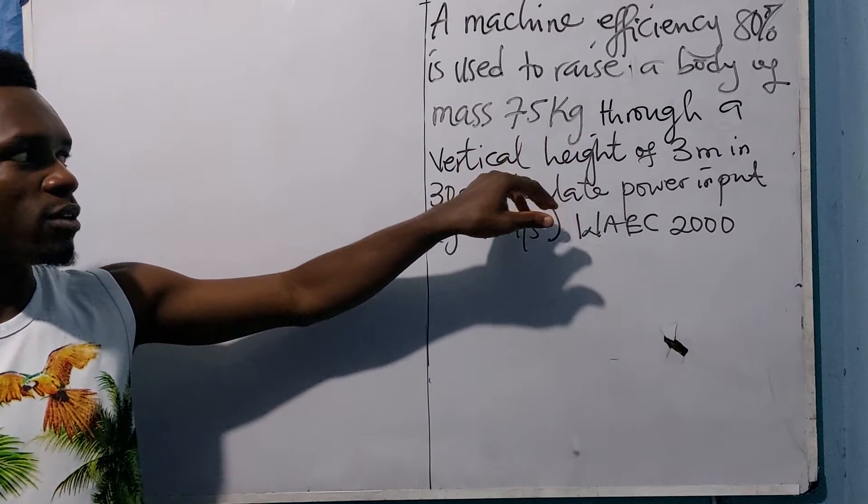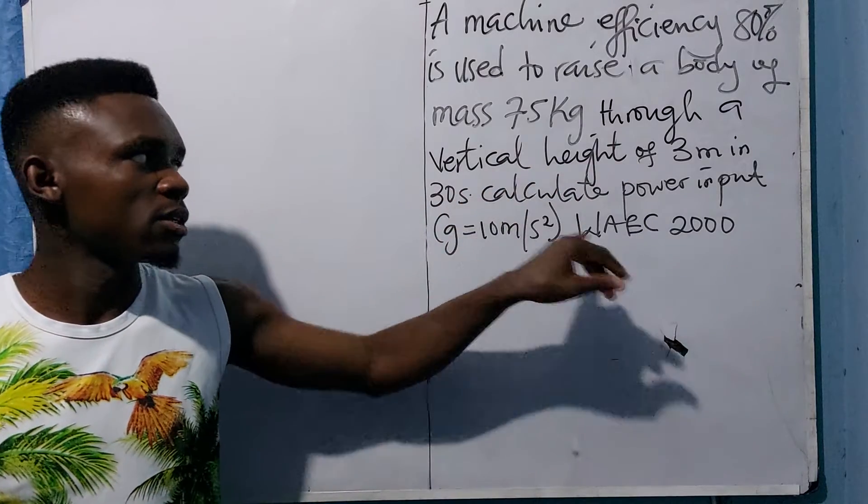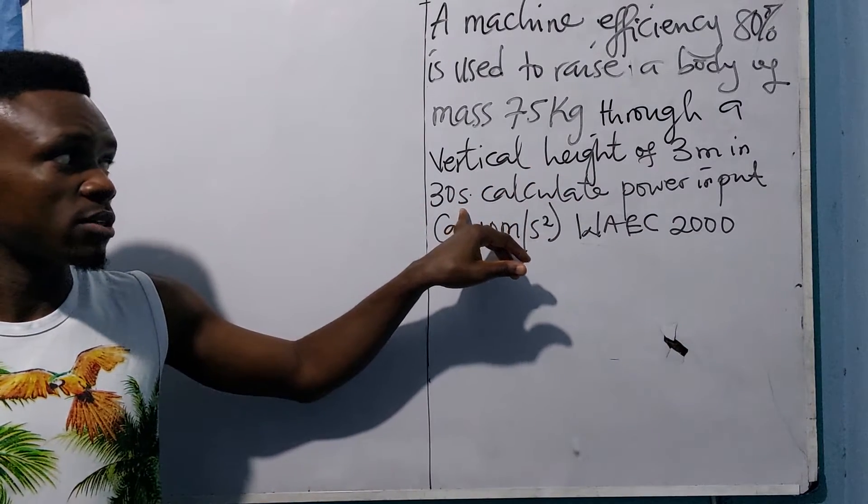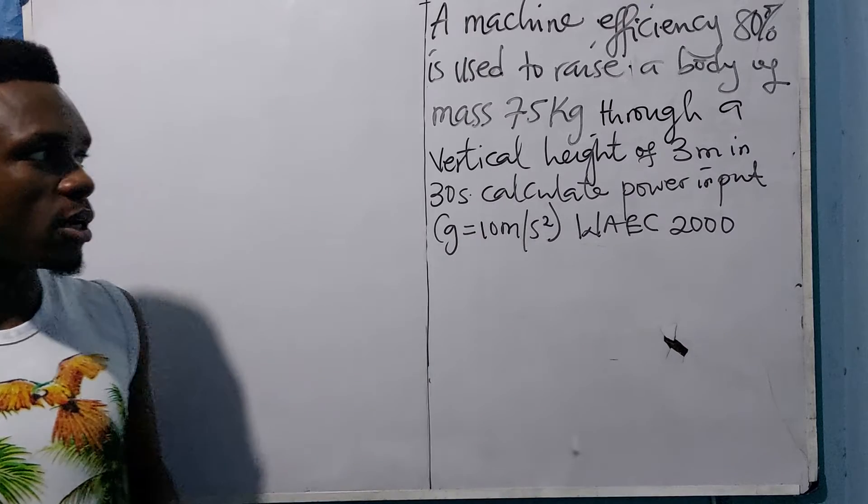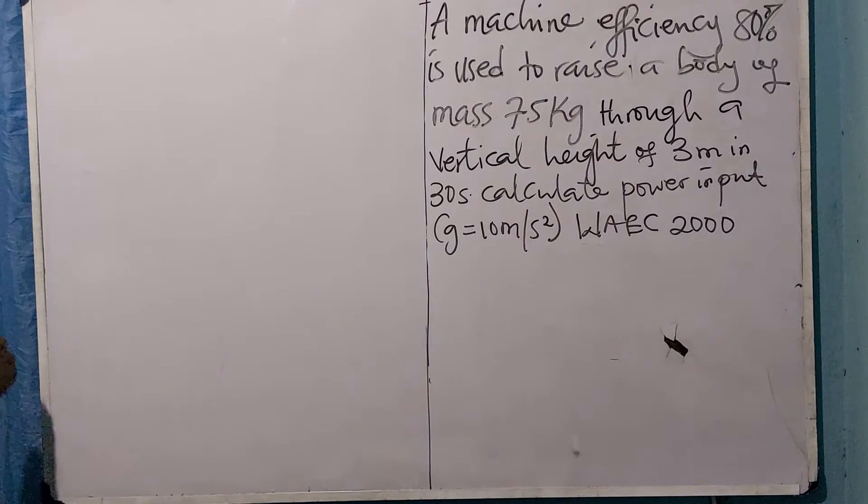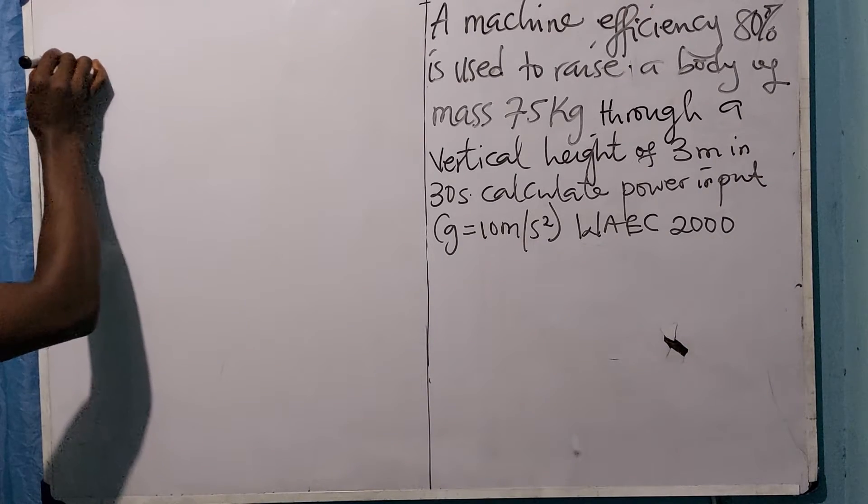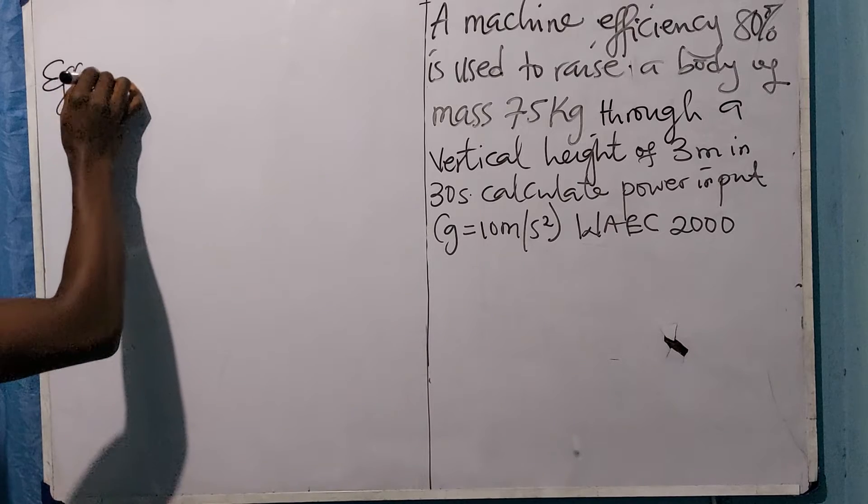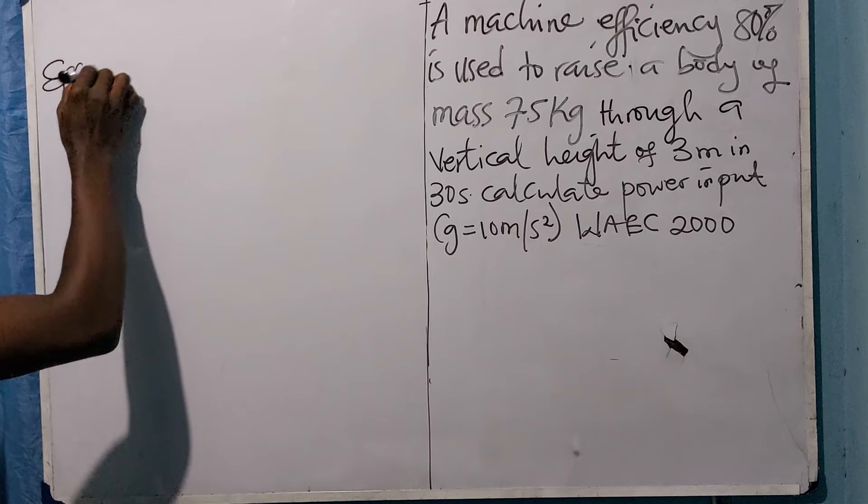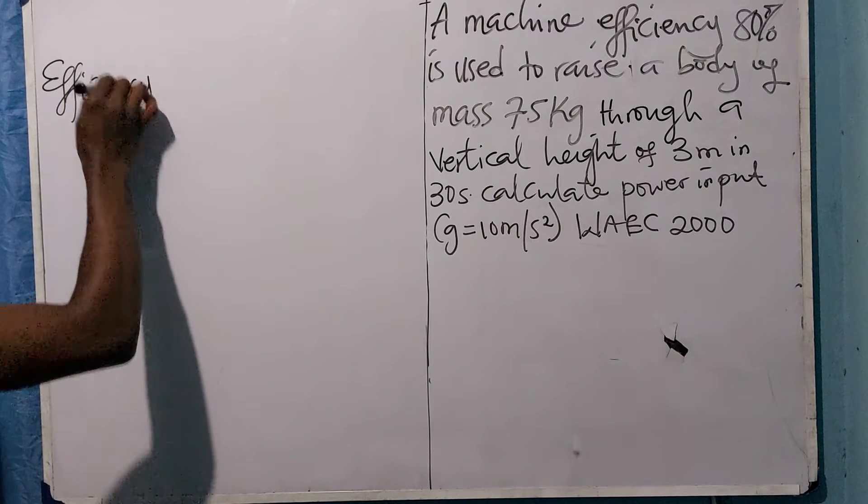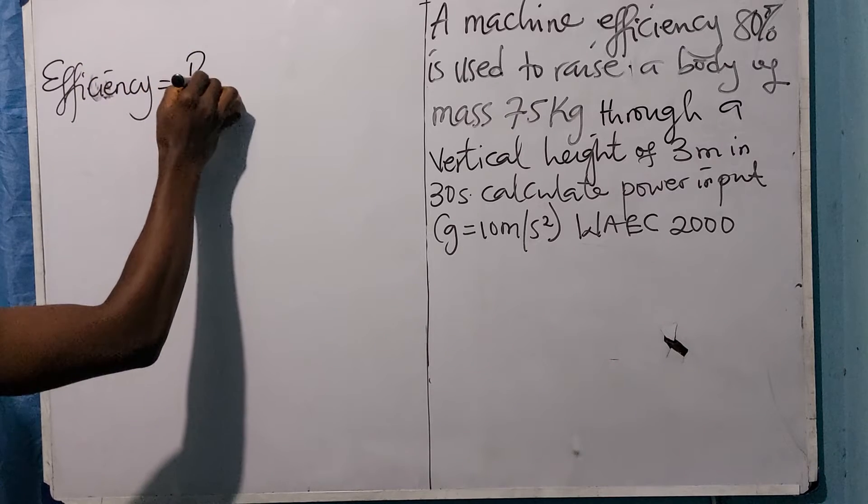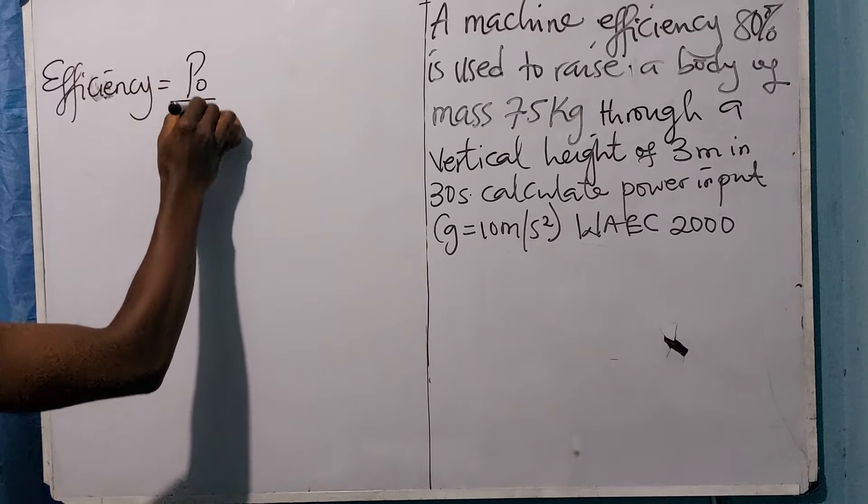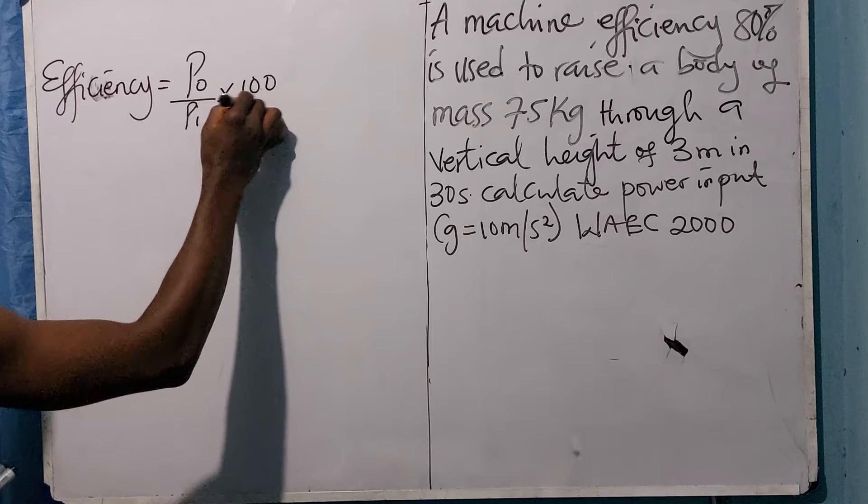The efficiency of a machine is given as power output over power input times 100 over 1. We were asked to look for the power input, so we have to first look for the power output.